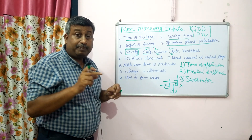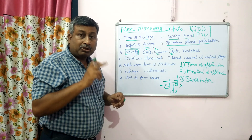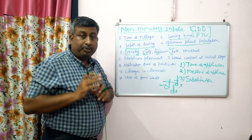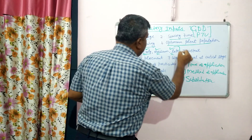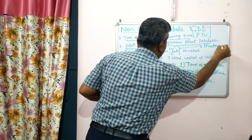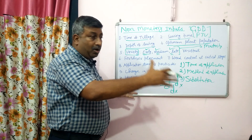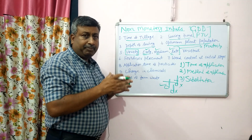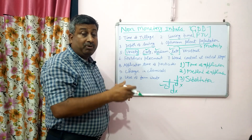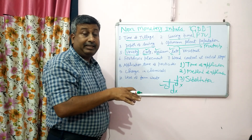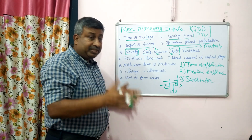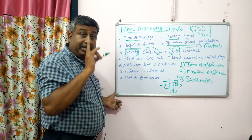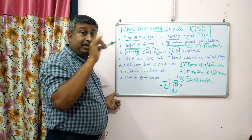There is generally no difference in price between early, medium, and late varieties. However, if it is a hybrid versus a composite variety, then it becomes a monetary input. With respect to maturity, variety selection is a non-monetary input — the maturity should be synchronized with the length of the growing season. But with respect to yield potential, hybrids are costlier than composites, making that a monetary input.